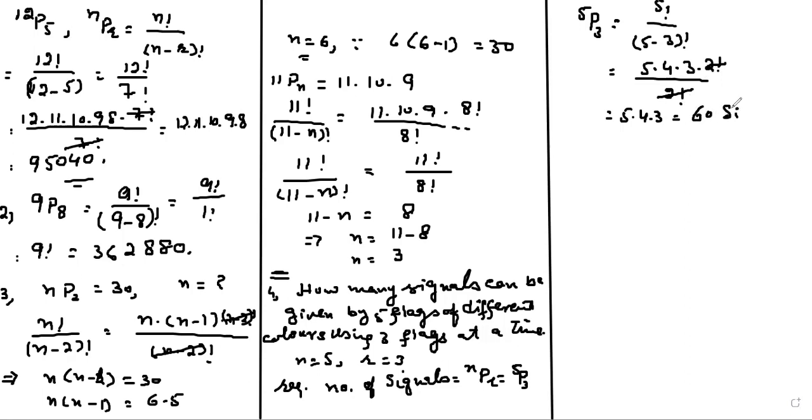60 signals is the answer. So with the help of these 5 flags, we can make 60 signals using 3 flags at a time. That's number 5.